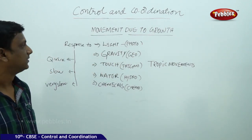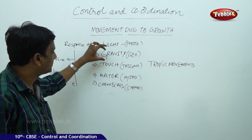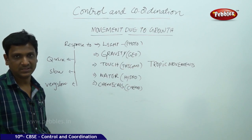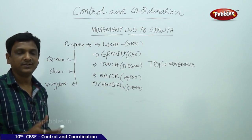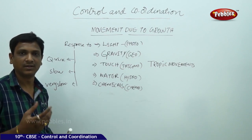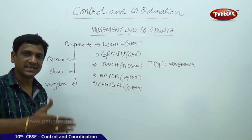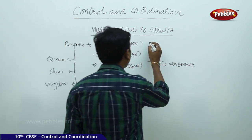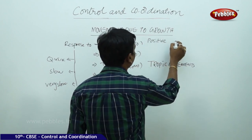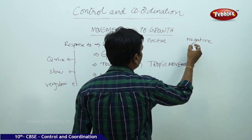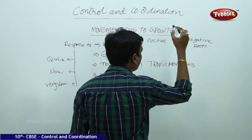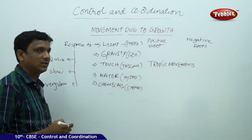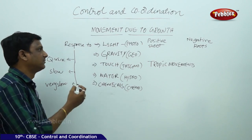Plants respond to light — this is called phototropism. Plants always grow towards sunlight. The stem grows towards sunlight while roots grow away from sunlight. So phototropism is of two kinds: positive and negative. Roots move away from the sun — that is negative phototropism. The shoot grows towards the sun — that is positive phototropism.